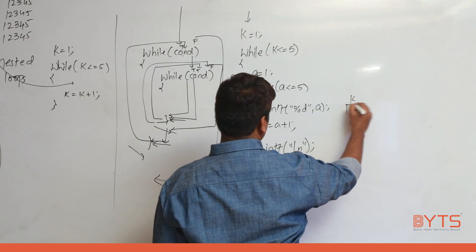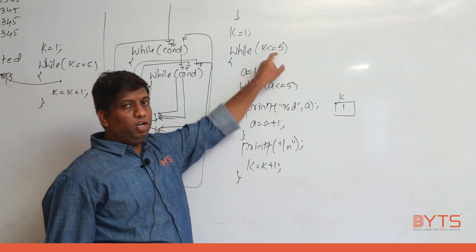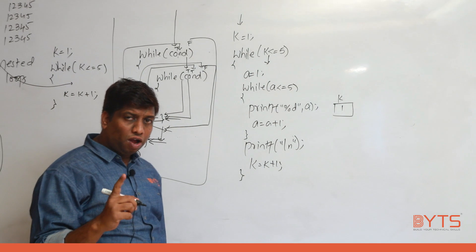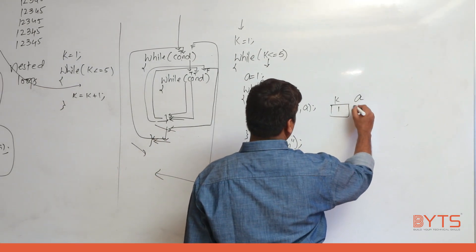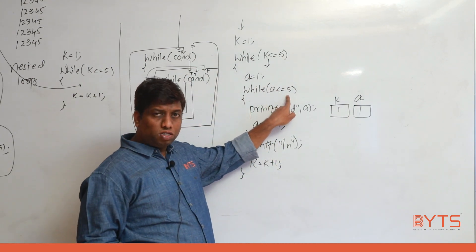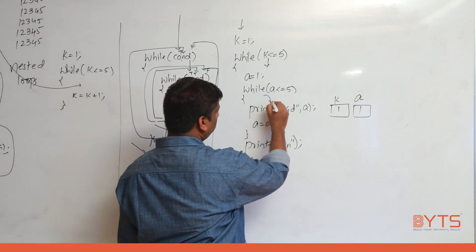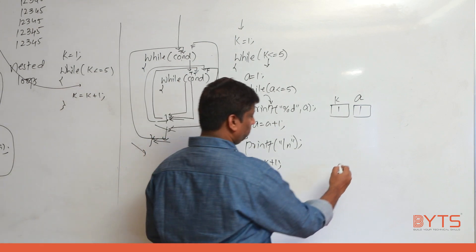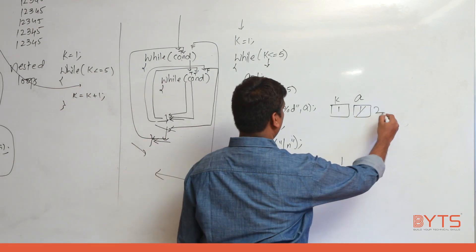Let's trace it. Initially k = 1. 1 <= 5, true — come inside. First statement: a = 1. Now 1 <= 5, true — enter inner loop. printf prints a = 1. Then a = a + 1 makes a = 2. We reach end of the inner loop and return to the inner loop condition.